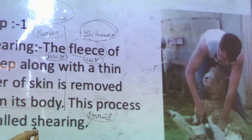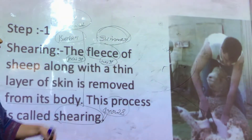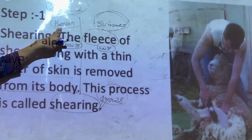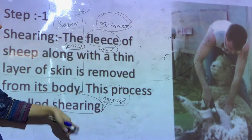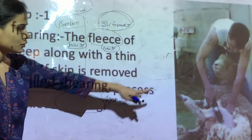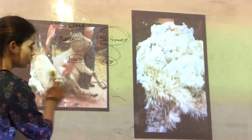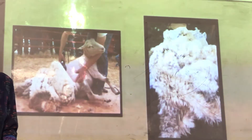Shearing is generally done in summer season using a tool very similar to the one used by a barber. Once shearing is done, after a few months the hair of the sheep grows back again. So this is the first process — shearing — the beginning of the journey toward making fabric. After shearing comes the next process, which is known as scouring.